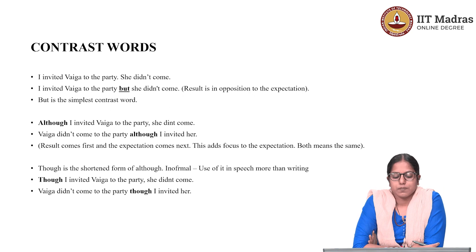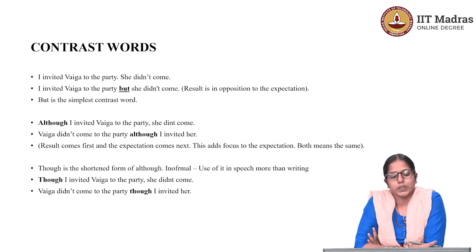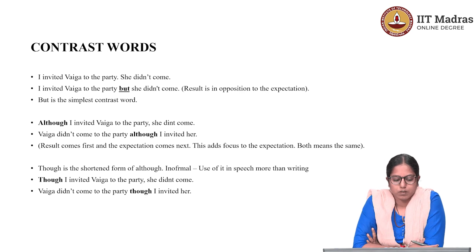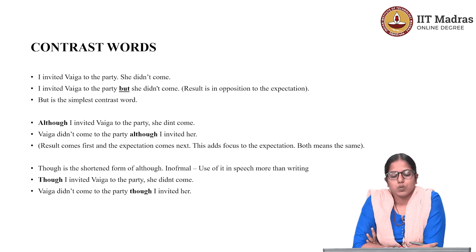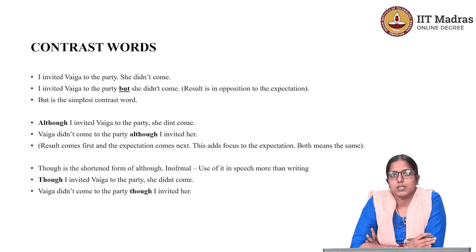When I say 'I invited Vyga to the party, but she did not come,' I am talking about the result — that she did not come — and this result is in opposition to the expectation. The expectation when inviting Vyga was that she would turn up for my birthday party, but she has not. So 'but' can be termed as a contrast word, and it is the simplest contrast word.